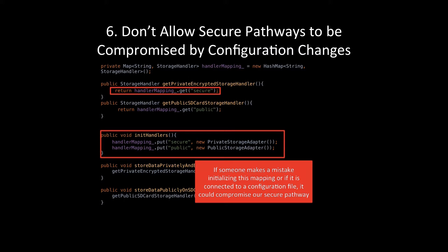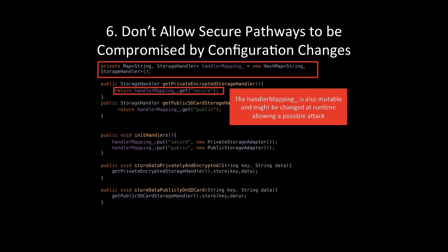Another challenge is that our handler mapping isn't immutable — it's a data structure that can be changed at runtime. Whenever a secure pathway relies on something mutable at runtime, we open ourselves up to the possibility of attack, or the possibility that a bug could compromise that secure pathway in certain execution scenarios. We want to make our secure pathways invariant and fixed at runtime, so that configuration errors in our application files or API usage don't cause them to break.